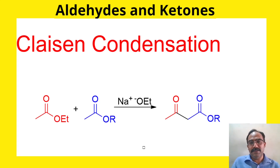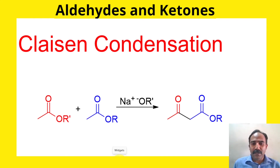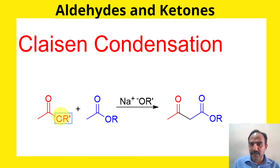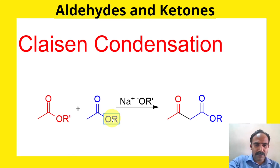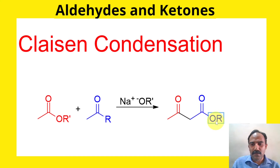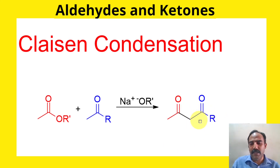Hi and hello all. Let us talk about Claisen condensation. In Claisen condensation, an ester or ketone which can be converted into an enolate is reacting with an ester in the presence of a base to produce a beta-keto ester or beta-diketone. If this species is a ketone with an R group, then the product is a beta-diketone.